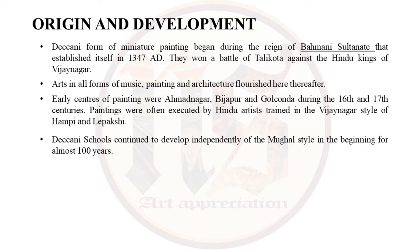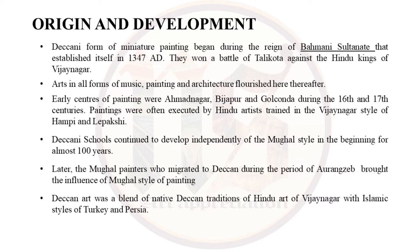Paintings were generally made by Hindu artists trained in the Vijayanagar style of Hampi and Lepakshi. This Deccani school continued to develop independently of the Mughal style for almost 100 years. Later, Mughal painters who migrated to Deccan during the period of Aurangzeb brought Mughal influence. So Deccan art became a blend of native Deccan Hindu traditions of Vijayanagar along with the Islamic styles of Turkey and Persia.